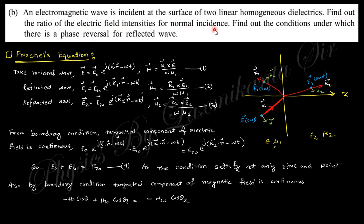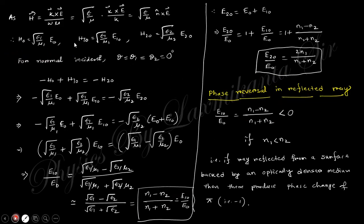The next part says: an electromagnetic wave is incident at the surface — find the ratio of electric field intensities for normal incidence, and find the condition under which phase reversal of the reflected wave occurs. This uses the Fresnel equations. For the incident, reflected, and transmitted waves, applying the boundary condition that the tangential component of the electric field is continuous, and similarly the tangential magnetic field is continuous, we get the standard relations.